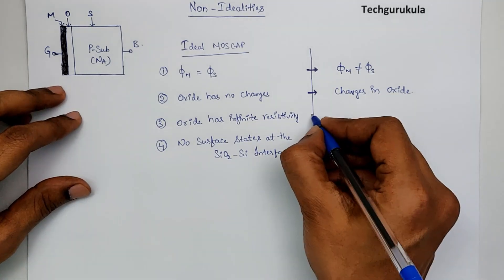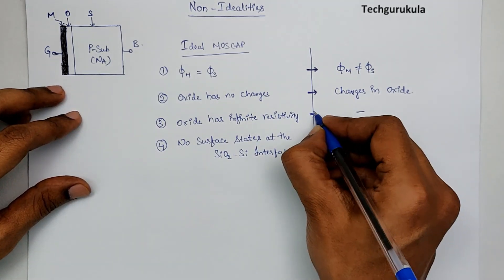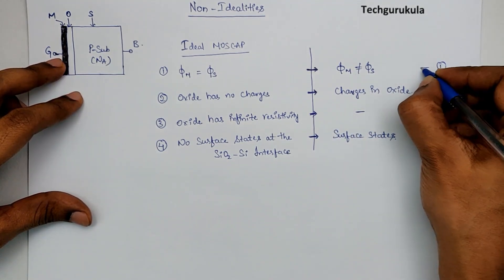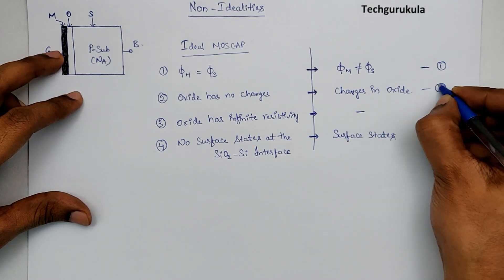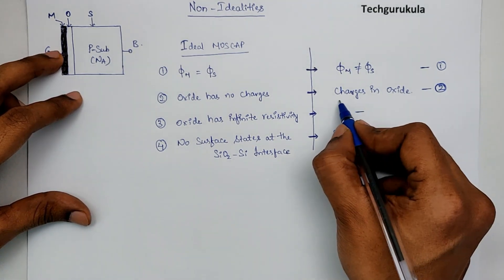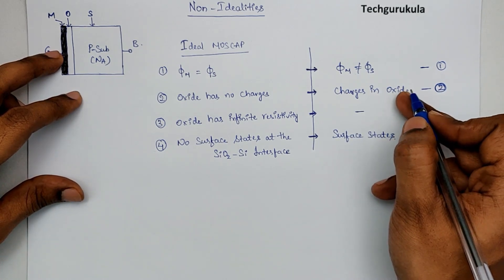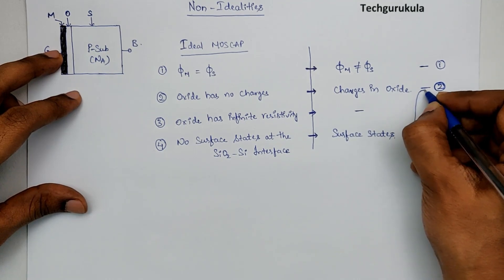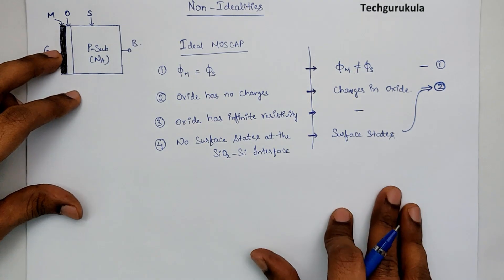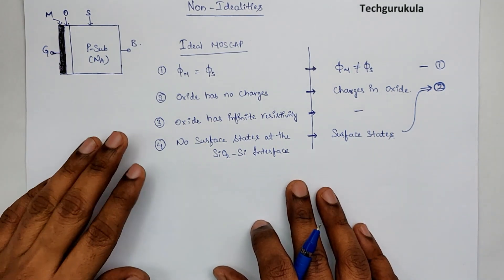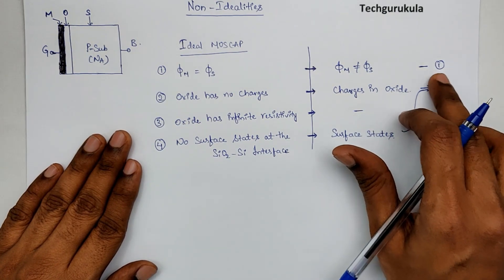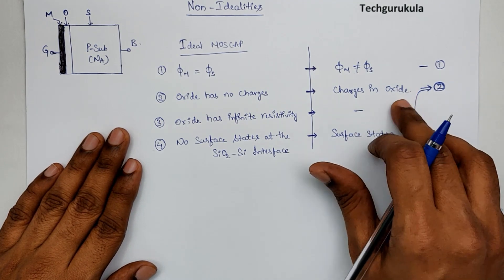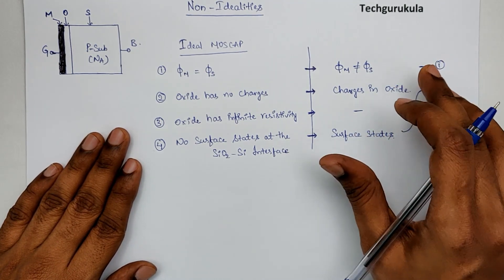In this section, we are going to bypass the infinite resistivity assumption and discuss the first non-ideality — work functions of metal and semiconductor are not the same — and the second non-ideality — charges present in the oxide. Once we understand charges in the oxide, we can extend this to incorporate the surface states as well to some extent.